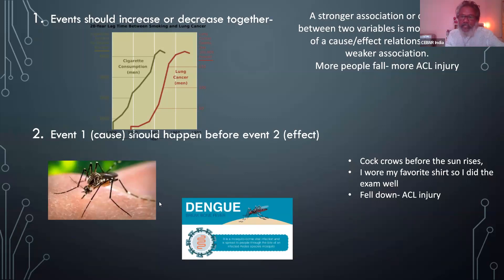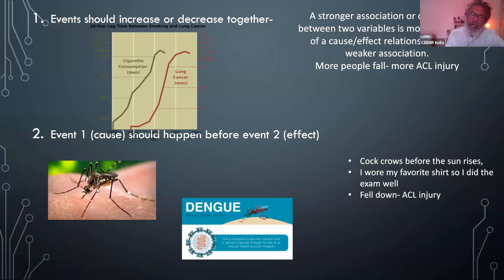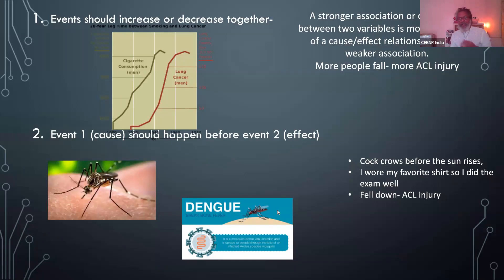There should be some relation, and the next thing is temporal variability — before you get dengue, you should first have the bite of a dengue-carrying mosquito. The cause should come first, then the effect; it cannot be the other way around. Many times we don't know whether one event preceded the other.